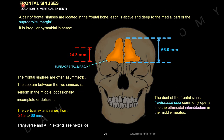Frontal sinuses — location and vertical extent. A pair of frontal sinuses are located in the frontal bone, each above and deep to the medial part of the supra-orbital margin. They are irregular pyramidal in shape. The frontal sinuses are often asymmetric, and the septum between the two sinuses is seldom in the middle — occasionally incomplete or deficient.